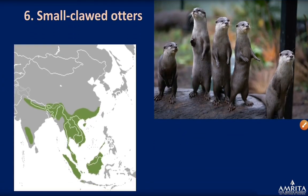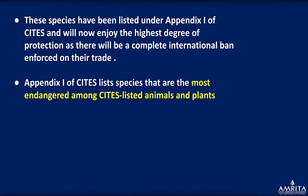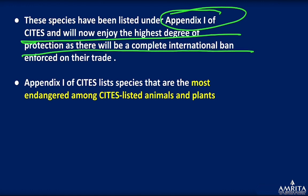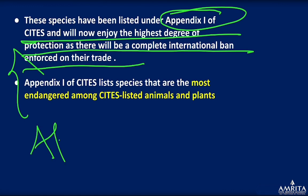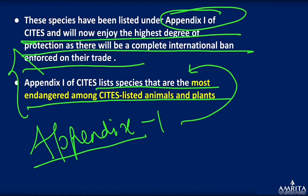The Small-clawed Otter is found in northeast India — it is really small and beautiful. Both otter species have been listed under Appendix I of CITES and will now enjoy the highest degree of protection. There will be a complete international ban enforced on their trade. Appendix I of CITES lists the species most endangered among CITES-listed animals, those whose trade has been causing survival problems.